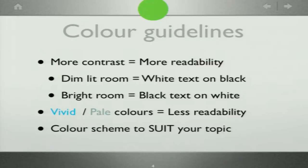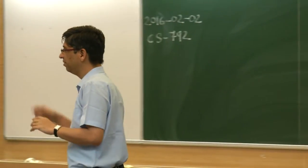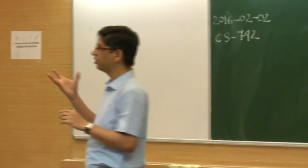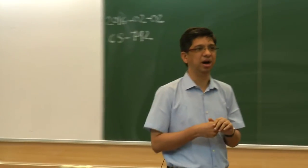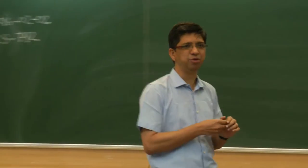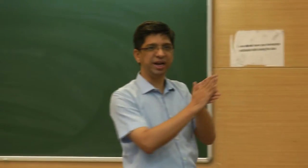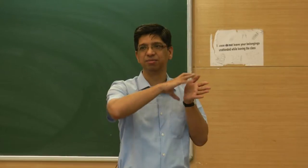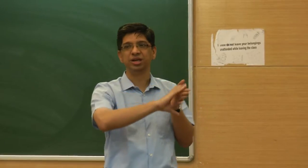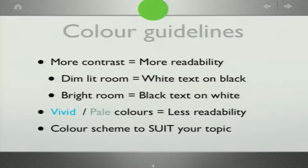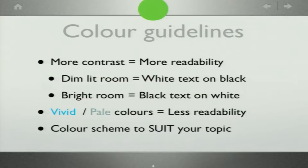Colors with a lot of vividness — now at least we are saved because of good quality projectors where vividness is controllable. Earlier, if you probably noticed, there used to be a bleed of color. So if you put red on something, you could see the color bleeding out. Now it's slightly more manageable.